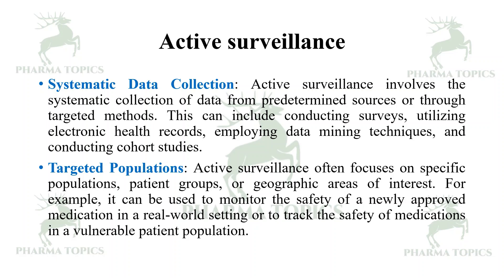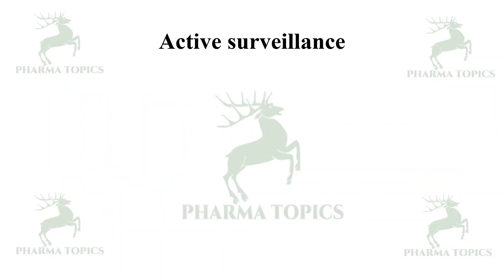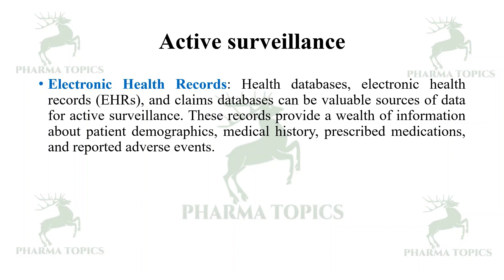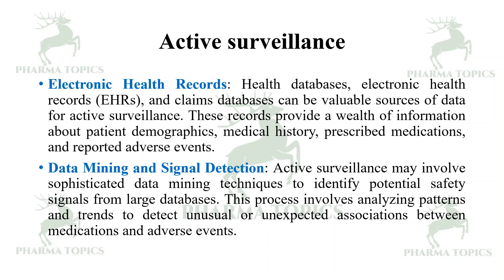Active surveillance often focuses on specific populations, patient groups, or geographic areas of interest. For example, it can be used to monitor the safety of a newly approved medication in a real-world setting or to track the safety of medications in a vulnerable patient population. Electronic health records and claims databases can be valuable sources of data. Active surveillance may also involve sophisticated data mining techniques to identify potential safety signals from larger databases, analyzing patterns and trends to detect unusual associations between medications and adverse events.